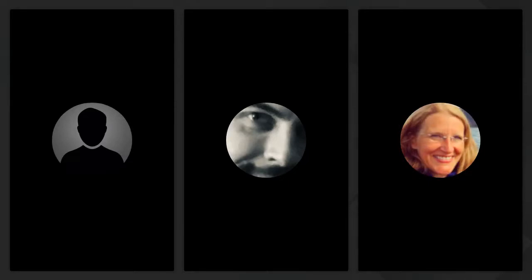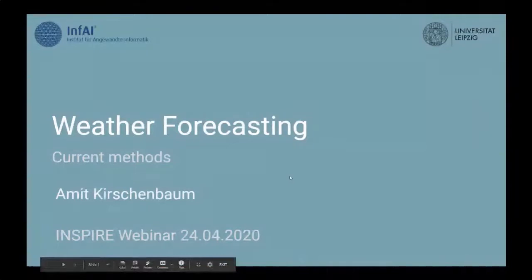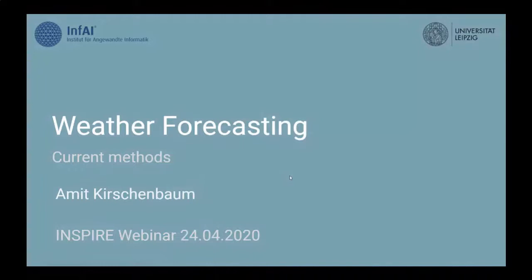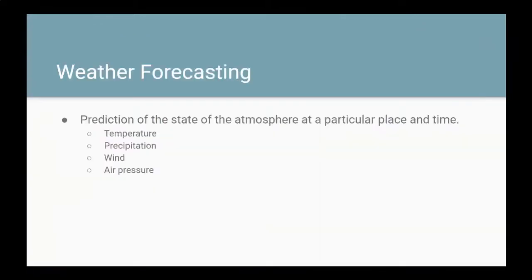We are ready to learn about weather. Amit begins his presentation. Weather forecasting can be defined as the prediction of the atmosphere at a particular place and time — predicting variables like temperature, precipitation, wind speed and direction, and air pressure. The first step of forecasting the future is to understand what is happening now. Meteorological variables are measured by instruments like surface stations, ships, weather balloons, and satellites, forming a global observing system.